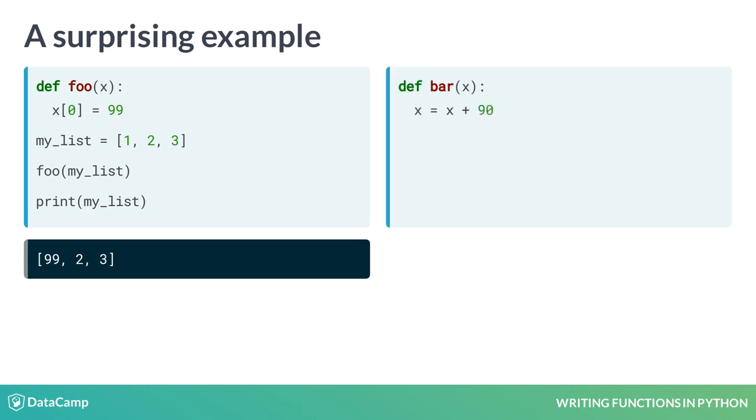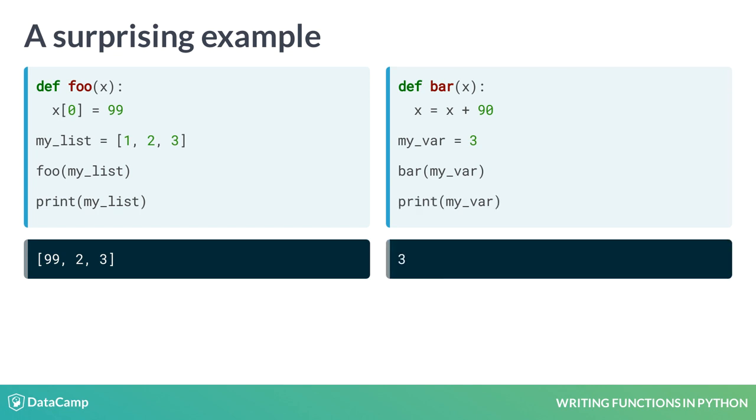Now let's say we have another function, bar, that takes an argument and adds 90 to it. Then we assign the value 3 to the variable myvar and call bar with myvar as the argument. What do you expect the value of myvar to be after we've called bar? If you said 3, you're right.